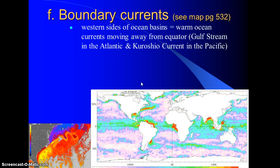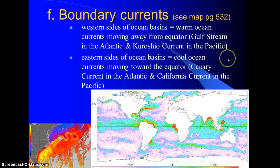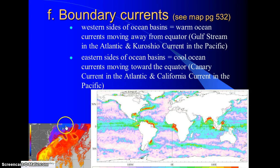Boundary currents run along the boundaries of the ocean basin. Thermal images show warm water coming up and around, delivering warmth to higher latitudes. The western side is warm — currents moving away from the equator. The east side is cool — currents moving toward the equator. A second thermal image of the Gulf Stream shows eddies forming, with the cold Labrador current to the north — where the two meet, we get fog.